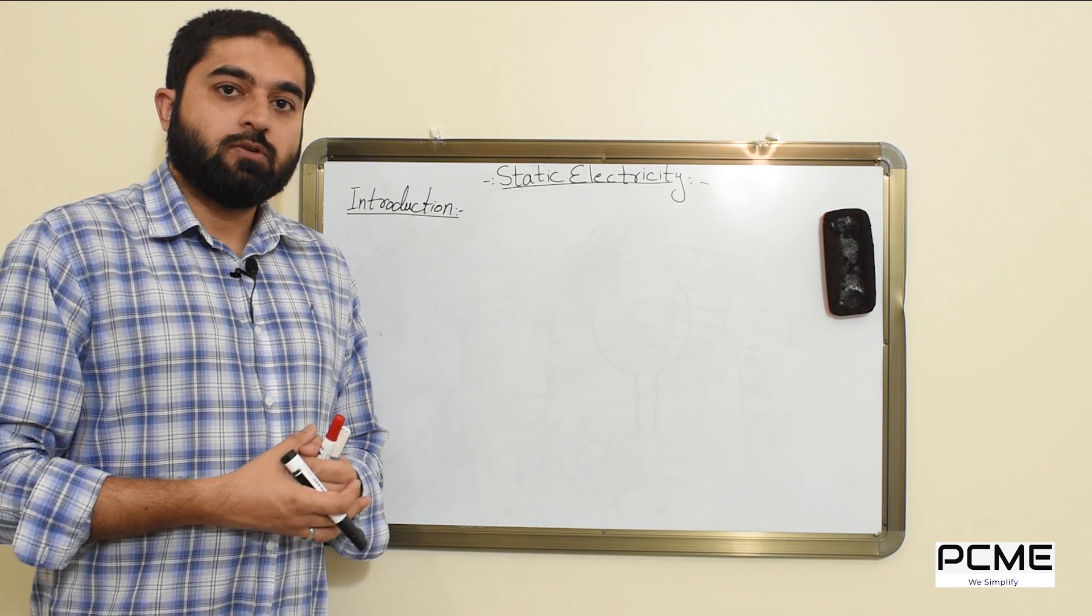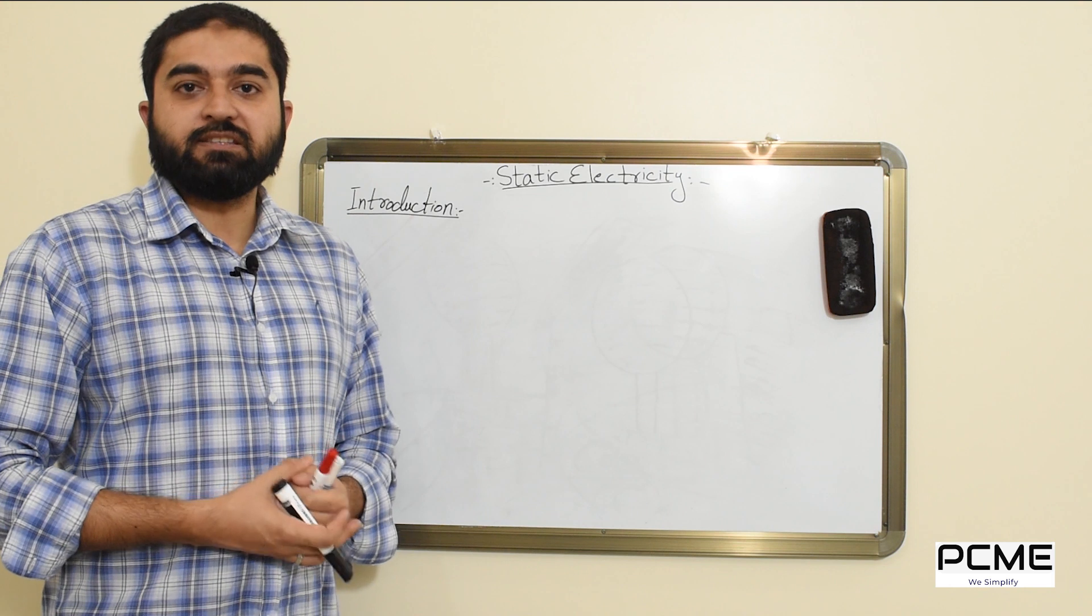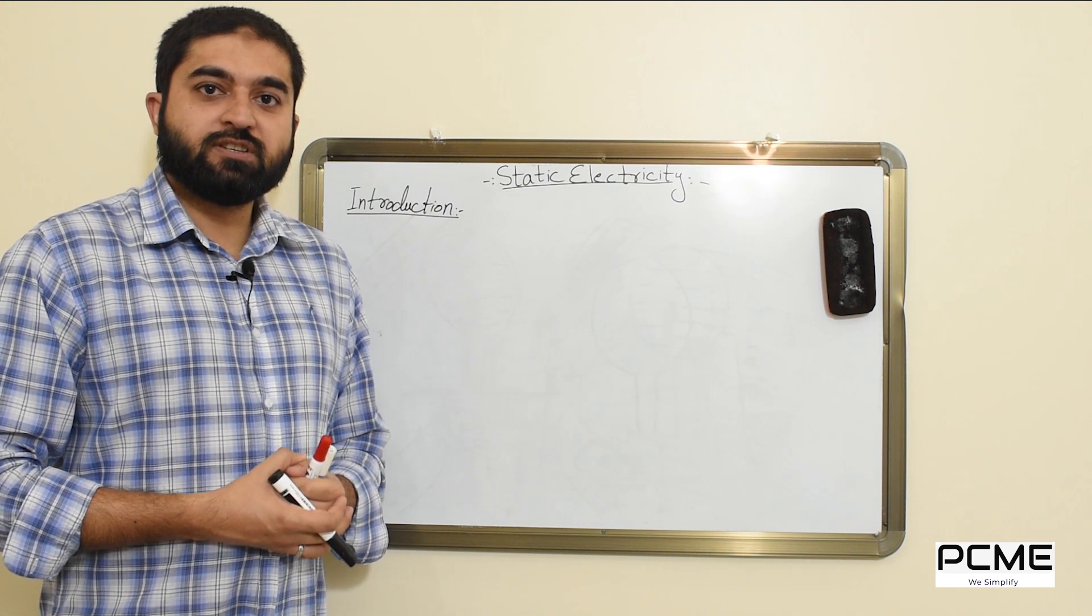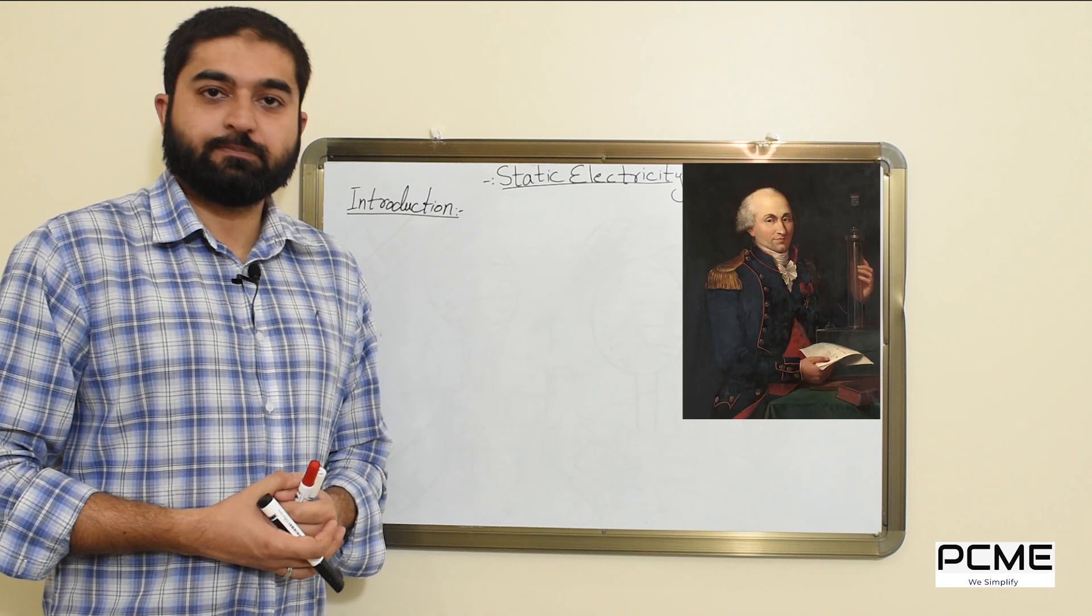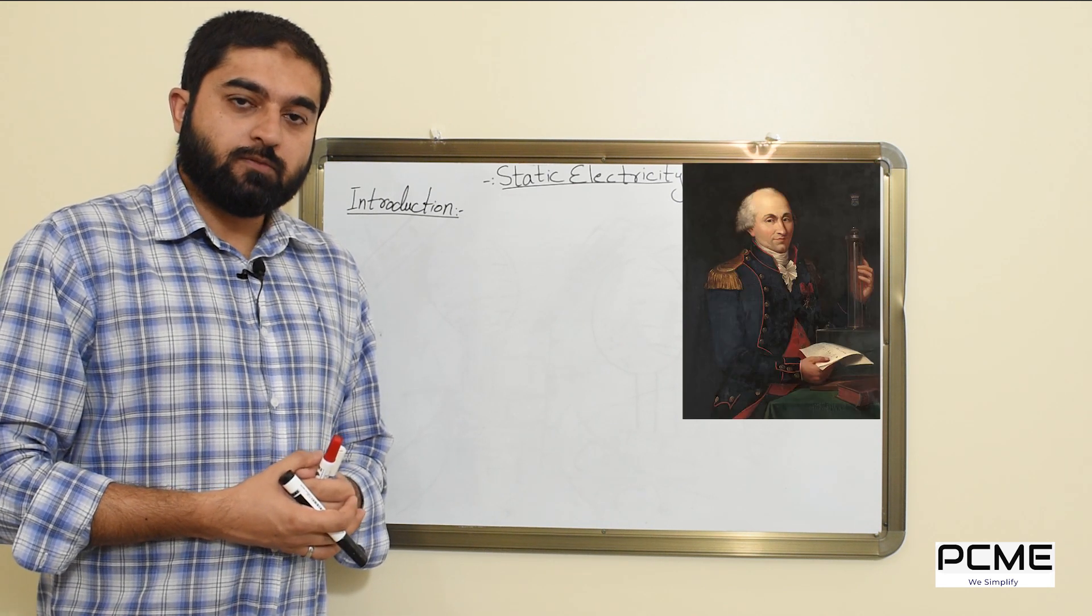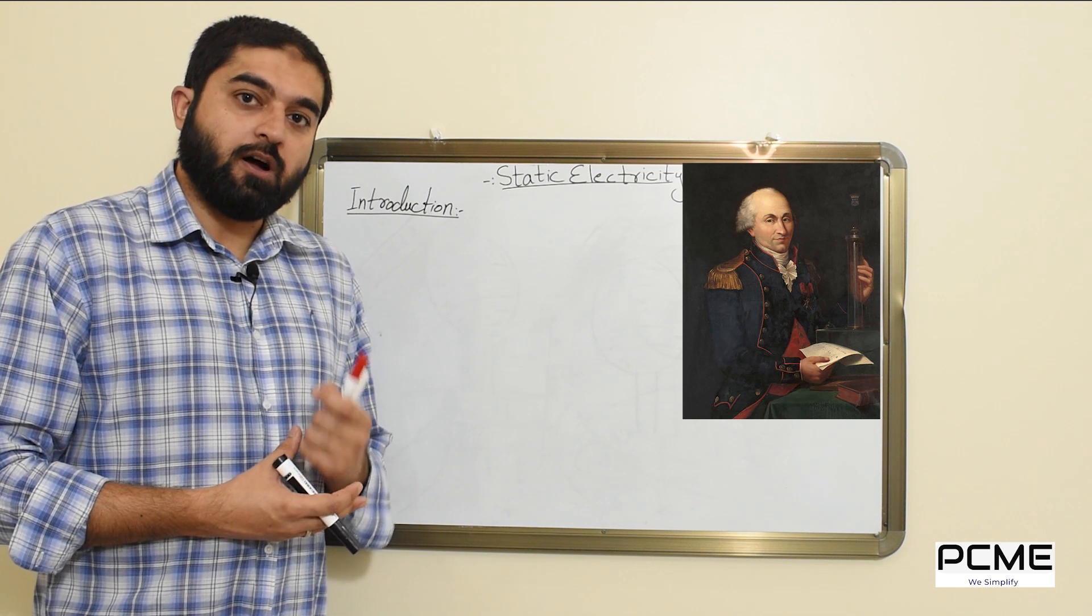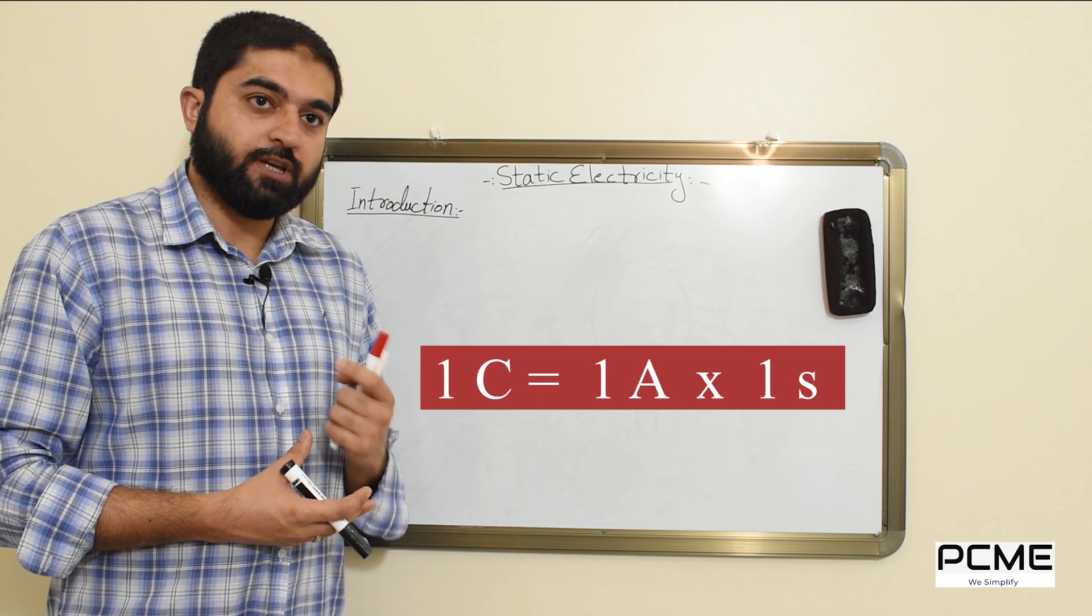So how is the charge measured? Well the SI unit for measuring charge is coulomb, which is named after the famous scientist. One coulomb of charge is exactly equal to one ampere of constant current passing through a point in one second.